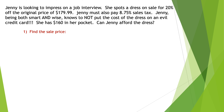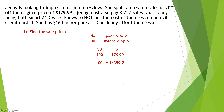Same process as before. First, find the sale price — this time it's 20% off. You could figure out 20% of the cost and subtract it from $179.99, but I personally prefer to just say: if I'm taking 20% off, I'm paying 80%. So I set the proportion up with 80% and arrive directly at the answer. The whole cost is $179.99. Cross multiply: 100x equals 14,399.20. Dividing by 100, I get $143.99 — the sale price.